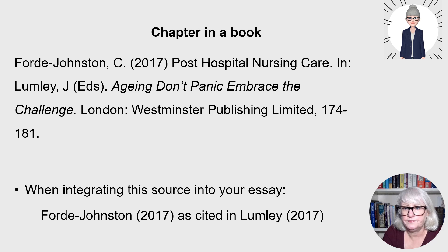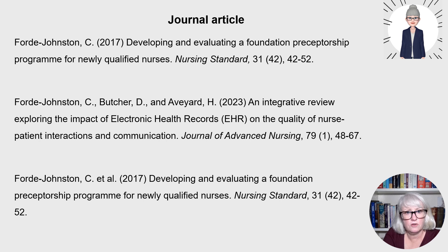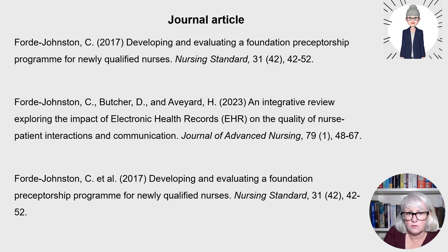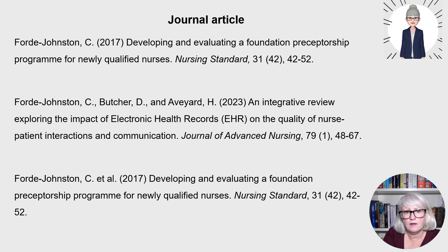For a journal article reference, you start the same way as a book — author's surname, initial, then year in brackets — but the title of the paper is not in italics. Instead, the name of the journal is in italics. You then put a comma, the volume number of the journal, the issue number in brackets, a comma, and then the page range — the start and end pages of that article. Examples for multiple authors follow the same pattern as for books, using 'et al' for more than three authors.